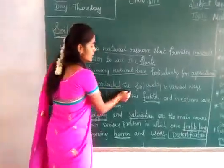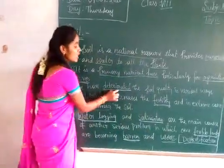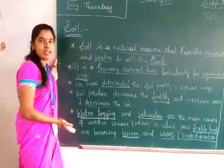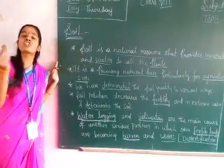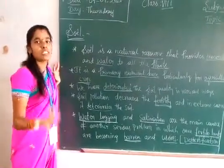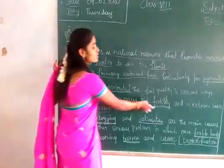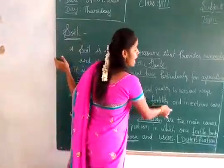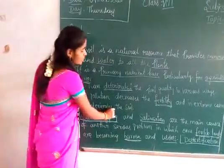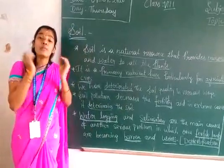We have deteriorated the soil quality in various ways. Deteriorated means become worse — our activities make the soil quality become worse, poor in quality. Soil pollution decreases the fertility and in extreme cases it deteriorates the soil.